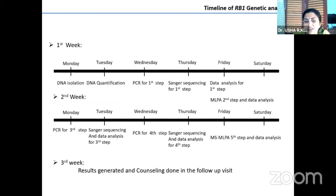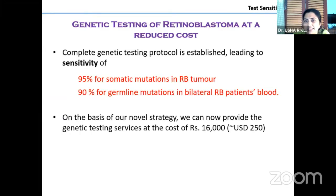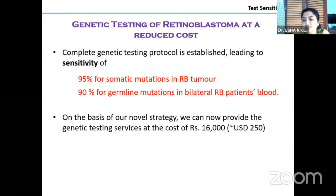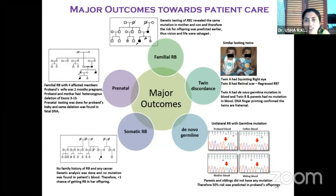The timeline taken was about 3 weeks from the time of acquiring the specimen — either blood or tumor specimen — to generate results and provide counseling. A complete genetic testing protocol was established leading to a sensitivity of about 95% for somatic mutations and 90% for germline mutations in bilateral RB patients' blood. We were able to bring down the cost to about 16,000 rupees, equivalent to about $250 US dollars. We could identify familial RB, twin discordance, de novo germline mutation, somatic RB, and prenatal testing was also made available.